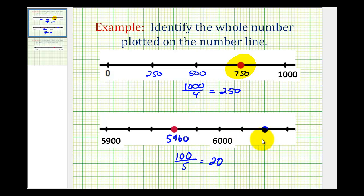Then 6,020, 6,040, and so on. So the number 5,960 is plotted here on the number line, and here we have 6,040 plotted on the number line.